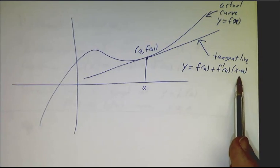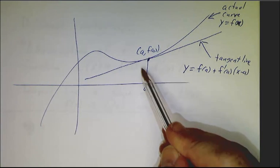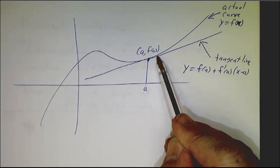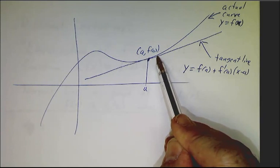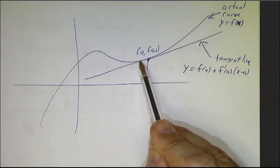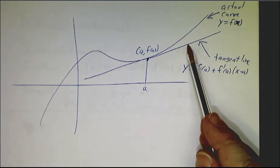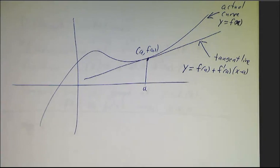The idea of a linear approximation is that whenever x is close to a, f(x) is going to be close to the value on the tangent line. The curve is a little bit above the tangent line, but it's very, very close. This line does the best of any possible line in approximating this curve.